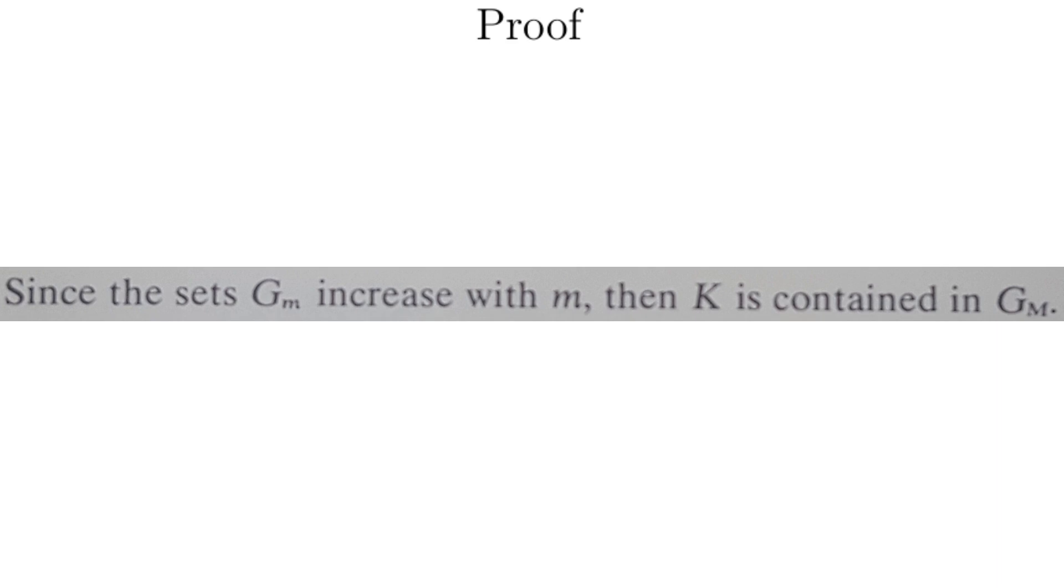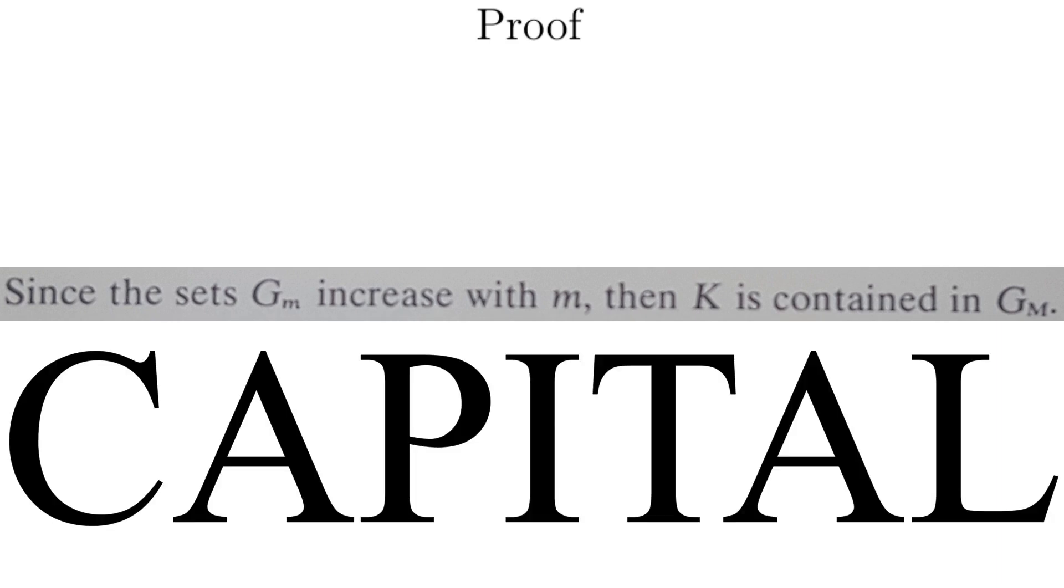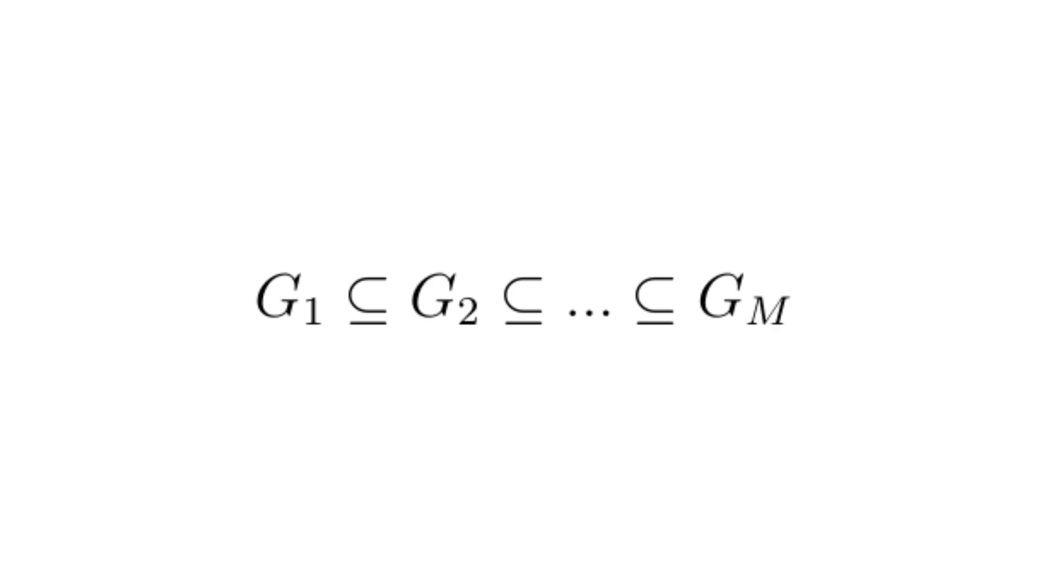Proof. Since the sets G_m increase with m, then K is contained in G_M. By increasing sets, we mean G_1 is a subset of G_2, is a subset of so on, is a subset of G_M. Since K is in the union of the sets G_1 and so on G_M, by definition of union we can just say that K is a subset of G_M.